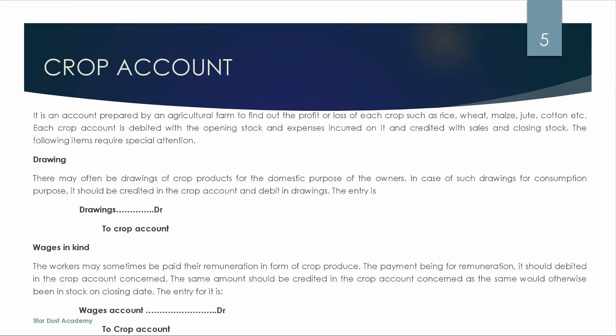The following items require special attention. First, drawings. There may often be drawings of crop products for the domestic purpose of the owner. In case of such drawings for consumption purposes, it should be credited in the crop account and debited in drawings. The entry is: Drawings account debit, Crop account credit.